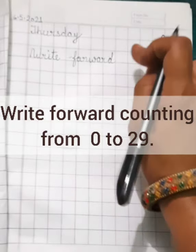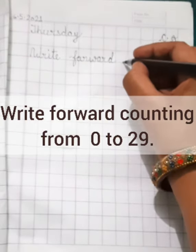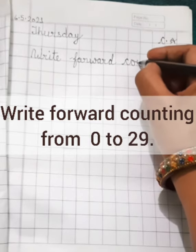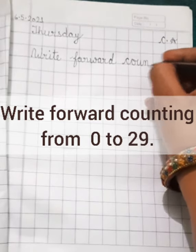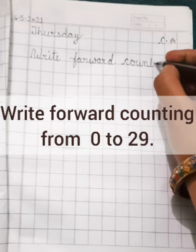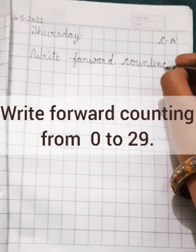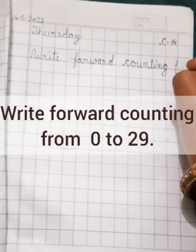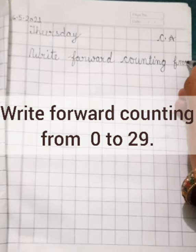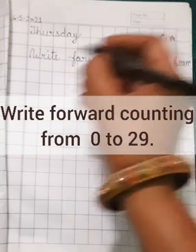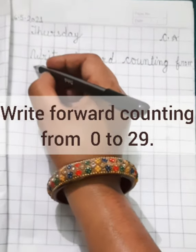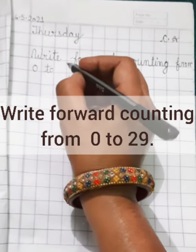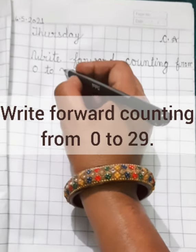Counting. Again, you will take one finger gap, C-O-U-N-T-I-N-G, forward counting, F-R-O-M, from zero to twenty nine.